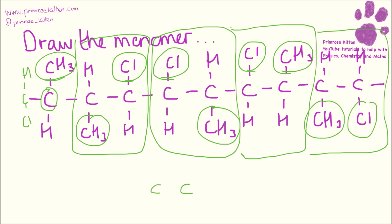Now we need to redraw it as a monomer. You're going to have to put your double bond in there. And then one of them needs a Cl, one of them needs a CH3, and a hydrogen, and a hydrogen.